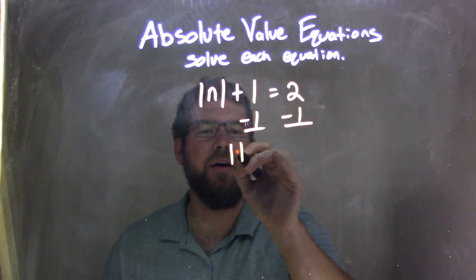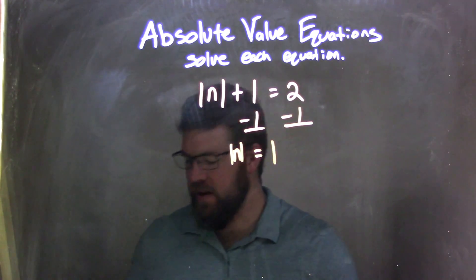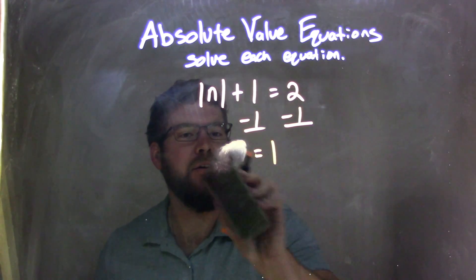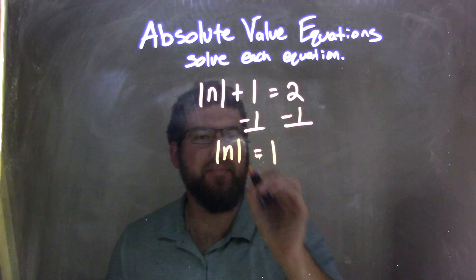Leaving me with the absolute value of n equals 2 minus 1, which is 1. Now, that's going to annoy me—I'm sure it would annoy you too. Absolute value of n. There we go.